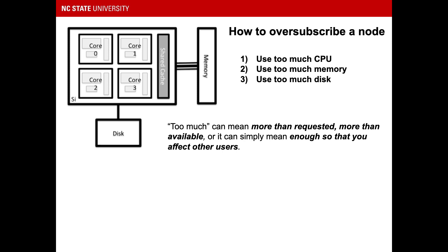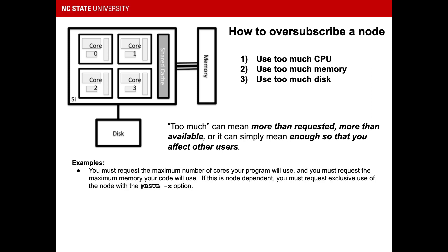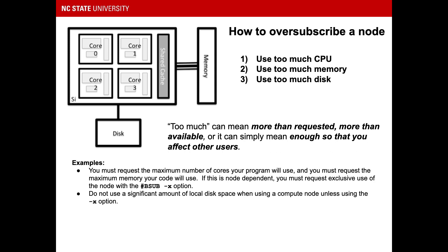You can oversubscribe a node by using too much of any of those things — too much CPU, too much memory, or too much disk. Too much can mean more than requested, more than available, or simply enough to affect other users. For example, you must request the maximum number of cores your program will use, and you must request the maximum memory your code will use. If this is node-dependent or in any way variable, you must request exclusive use of the node with the -X option. Other examples include stressing the file system — do not use a significant amount of local disk space when using a compute node unless using the -X option.